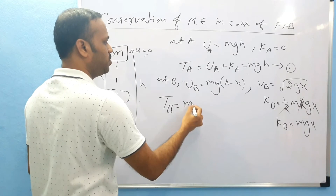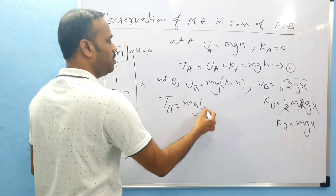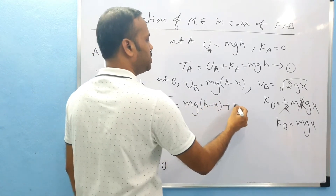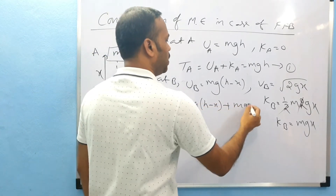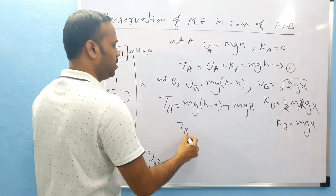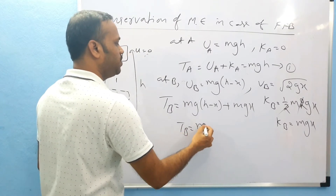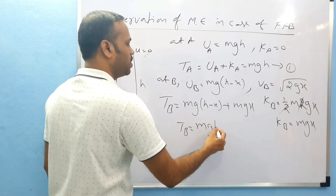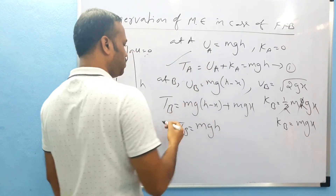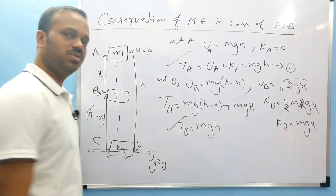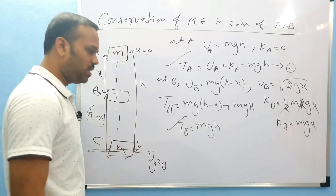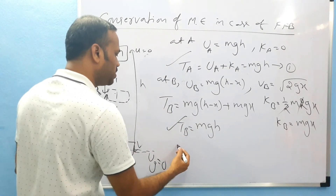KB is equal to mgx. So what is total energy at B? UB plus KB equals mg(h minus x) plus mgx. The mgx terms cancel, and total energy at B is equal to mgh.